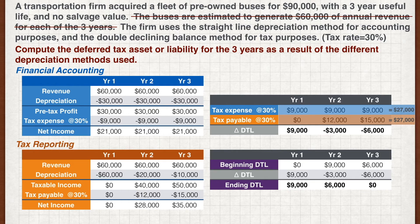Using this method may be easier to comprehend, but there are shortcomings. Besides being more tedious, imagine the case where we are not able to estimate the revenue for each year. A faster approach is to use the difference between the carrying value and the tax base of the asset.